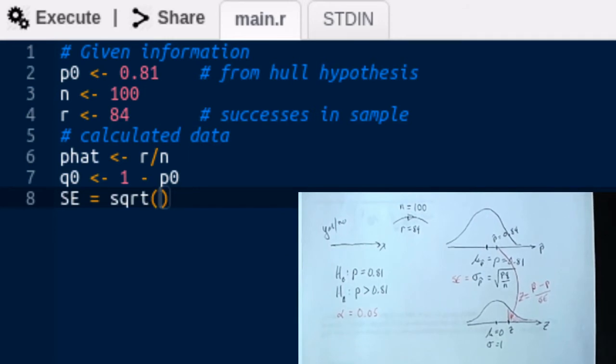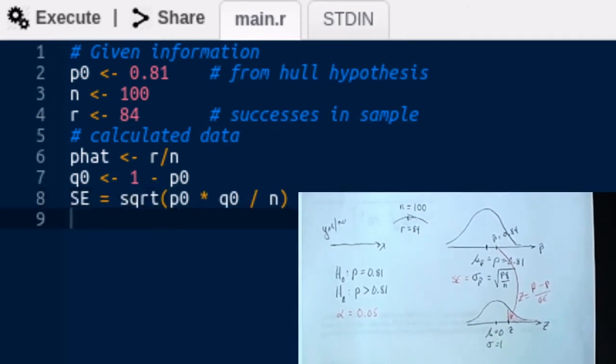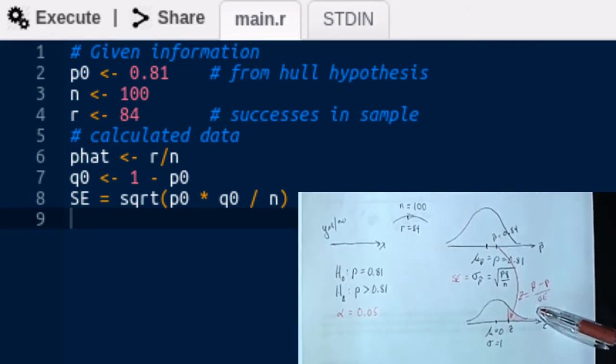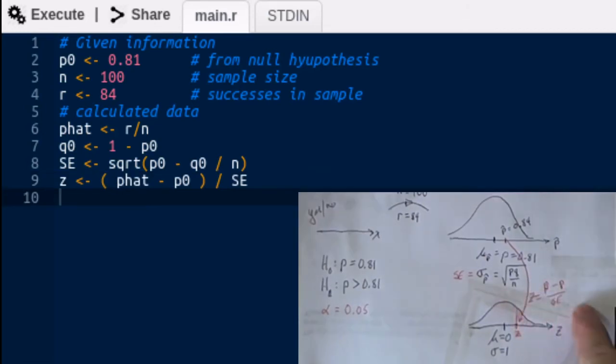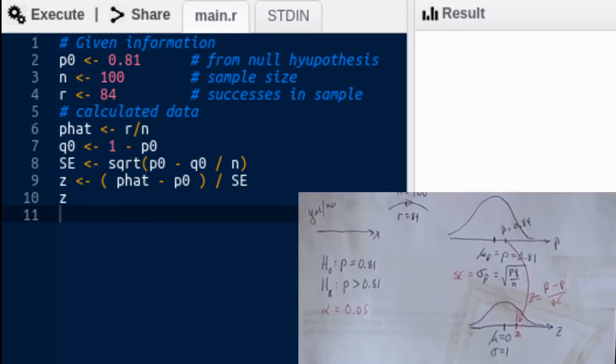The standard error will be the square root of P times Q divided by N. Really that formula. So now I know that standard error and I'll be able to calculate Z. So we now have enough information to calculate what Z is. The Z is just calculated by this formula. So we'll put that into our code. And then if we execute the code, we get a Z value that's a little less than 3%. Now that was all that was asked for in the particular problem that we had.